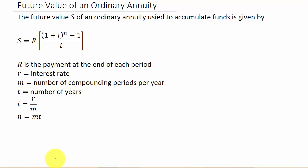So the future value of an ordinary annuity — an ordinary annuity is where payments are made at the end of each period, and the frequency of payments is the same as the frequency of compounding the interest. The future value of an ordinary annuity is the total amount of money that you will have earned from your payments and interest. You're making all these payments at the end of each period and accumulating interest — how much money will you have total at the end? That's what you're finding.